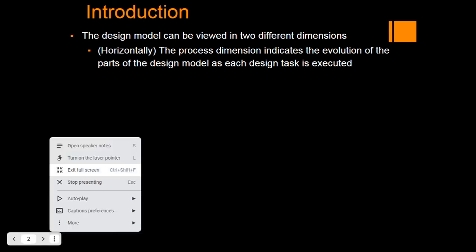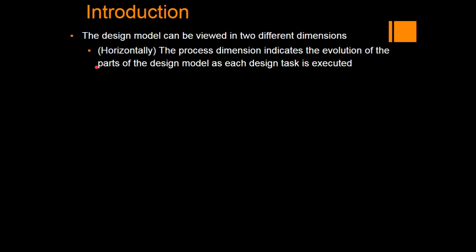The horizontal process dimension indicates the evolution of the parts of the design model as each design task is executed. Once you start defining the design of any software development process, we can design those either in the vertical or in the horizontal fashion. In the horizontal approach, we elaborate on all the tasks at a stretch — that means suppose we have 10 tasks for a particular process and each task is executed one after the other. That is called horizontal design.